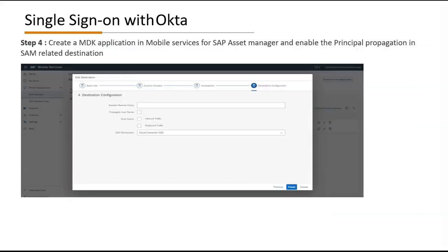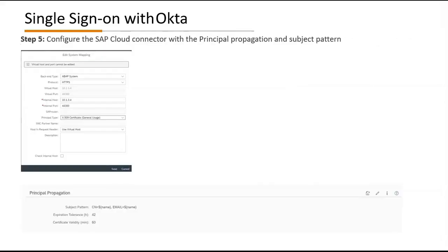Step four: create an MDK application in mobile services for SAP Asset Manager and enable principal propagation in the SAML-related destination. Step five: configure the SAP Cloud Connector with the principal propagation and subject pattern.